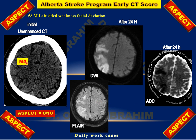The involved areas are M5 and M6, because we are at the level above the ventricular system. There are deductions of two points only, giving ASPECTS 8 out of 10.